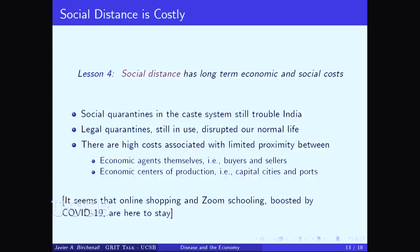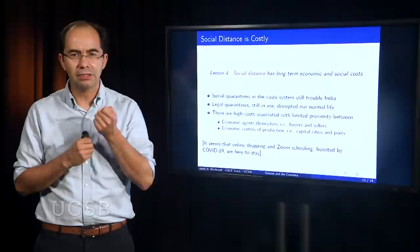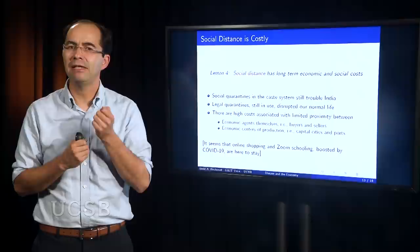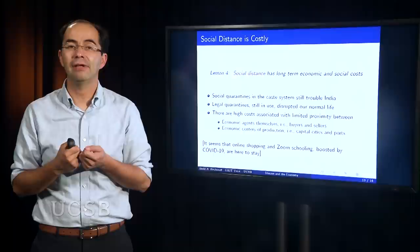Now, the quarantines that we see in the caste system, the social quarantines, still trouble India. Even though there's a legal restriction against discrimination, breaking the caste system has been very, very difficult. Quarantines, the legal ones, have disrupted our normal life. And even though we are much more advanced in terms of knowledge, technology, the first response that we had with COVID was sort of the same response we instituted hundreds of years ago when we first faced bubonic plague.